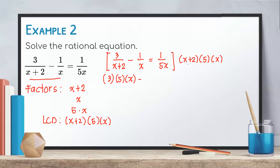Copy the minus sign. Next, multiply the LCD by the second rational expression. Since the denominator here is x, the x will be canceled, leaving us with 1 times (x + 2) times 5. Copy the equal sign. Finally, for the third rational expression, the denominator is 5x, so 5 and x will be canceled, leaving us with 1 times (x + 2).